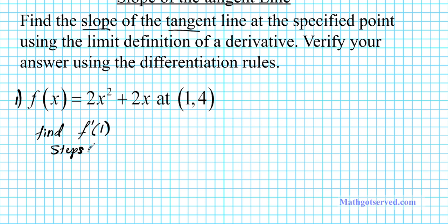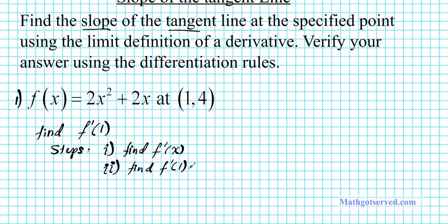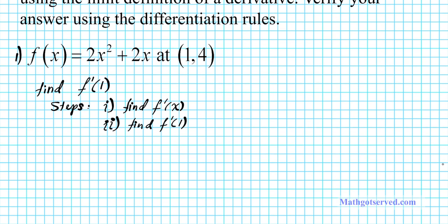Step one: you want to find the derivative, f prime of x. f prime of x is a function that can help you calculate the slope of the tangent line at any point on the curve or line or whatever the function is. After you find that function, step two is you are going to find f prime of 1 — you fix your slope to a specific x value by inputting that x value, namely 1 in this case, and the answer you get will be the slope of your tangent line at that specific x value.